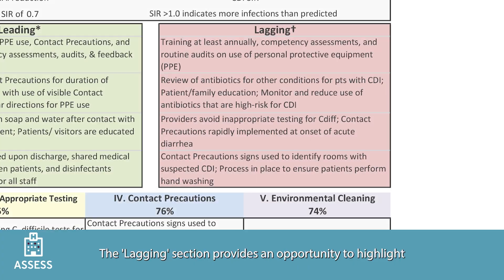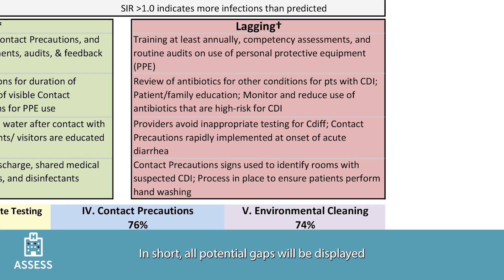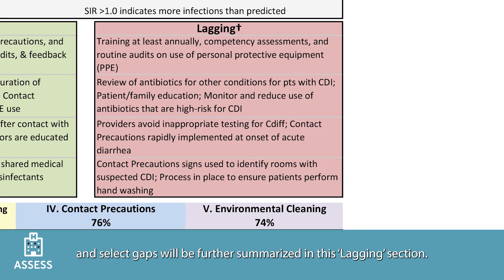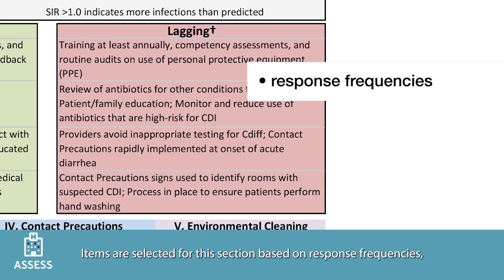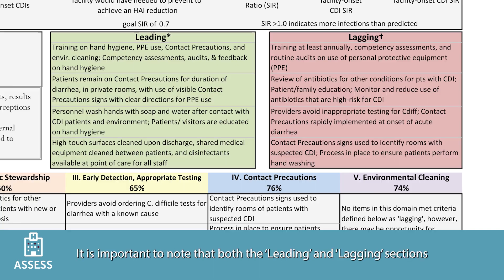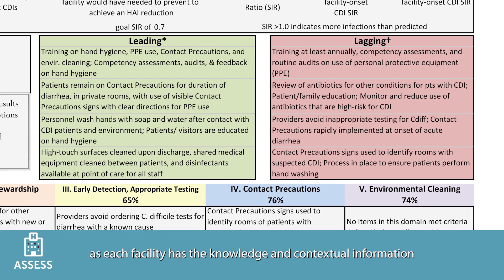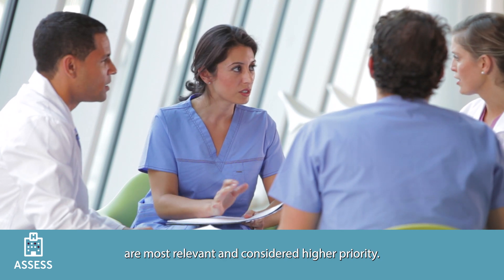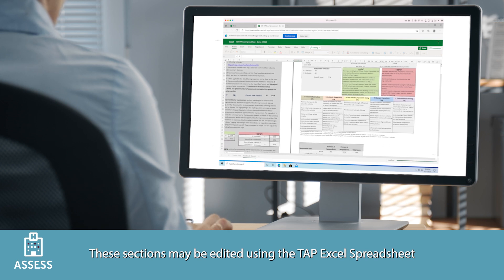The lagging section provides an opportunity to highlight and prioritize potential gaps. All potential gaps will be displayed in the top opportunities for improvement section, and select gaps will be further summarized in the lagging section. Items are selected for this section based on response frequencies, clinical relevancy, and previous prevention efforts described by the facility. Both the leading and lagging sections may be modified and updated by the facility, as each facility has the knowledge and contextual information to determine which potential gaps are most relevant and higher priority. These sections may be edited using the TAP Excel spreadsheet.